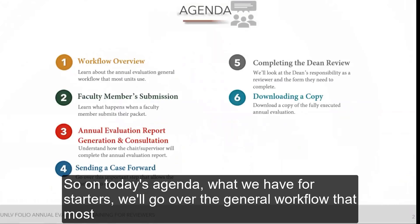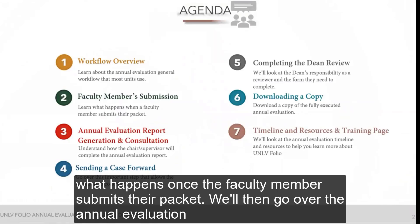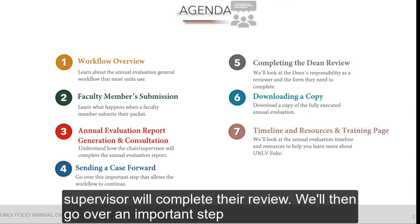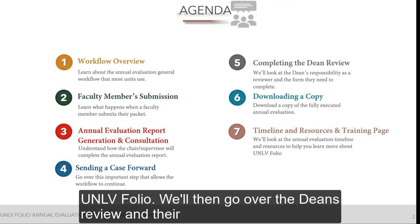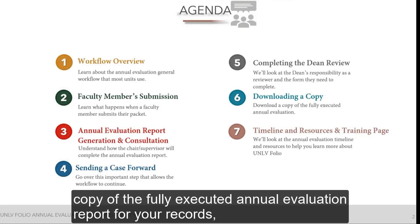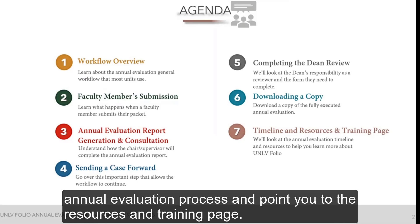On today's agenda, we'll go over the general workflow that most units use for the annual evaluation process. We'll talk about the faculty member's submission and what happens once they submit their packet. We'll go over the annual evaluation report generation and consultation step, the chair or supervisor's review, sending the case forward, the dean's review, downloading a copy of the fully executed annual evaluation report, and a timeline of important dates and resources.